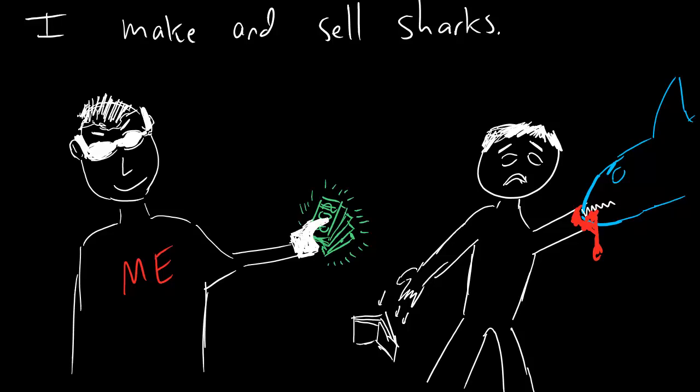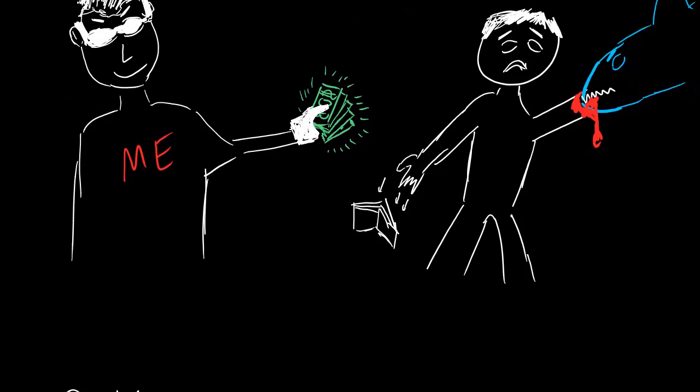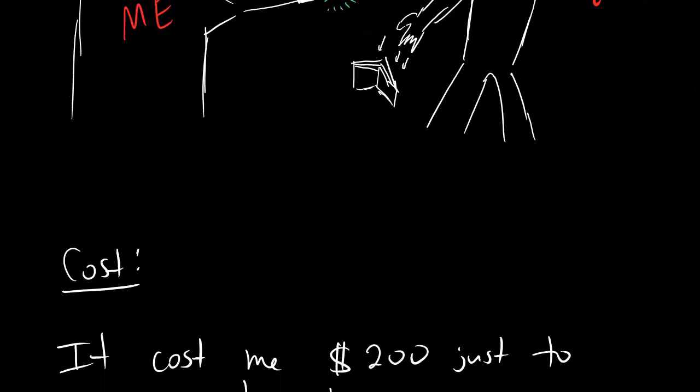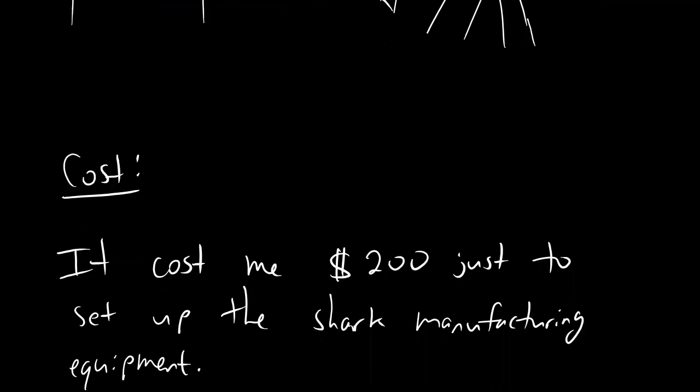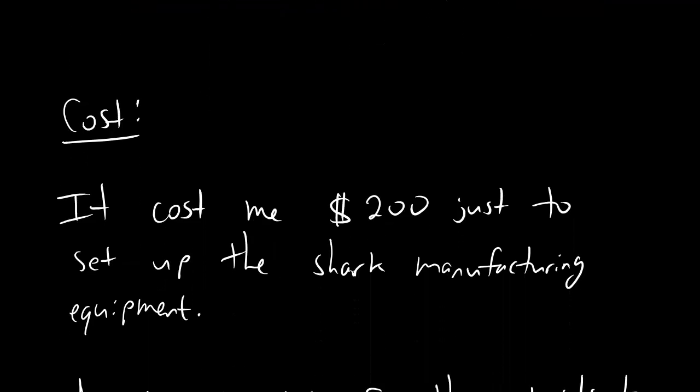So here's me raking in a handful of cash while my patron of the store gets mauled by a shark. And I think that's pretty straightforward. But here is the exact mathematical problem that I have to face today. There are costs involved in making these sharks. This doesn't happen for free, people. Sharks don't grow on trees.